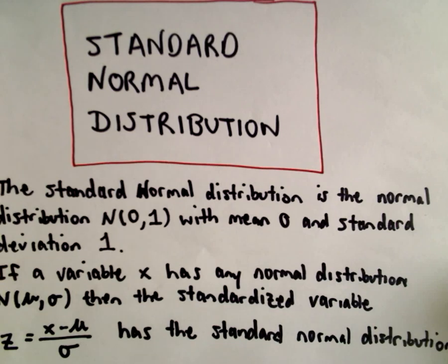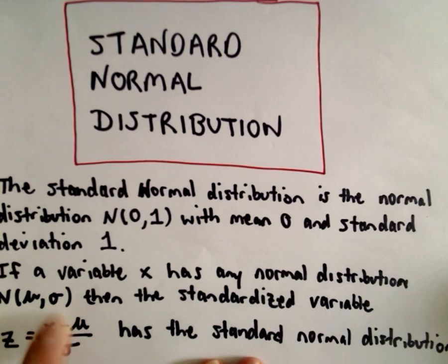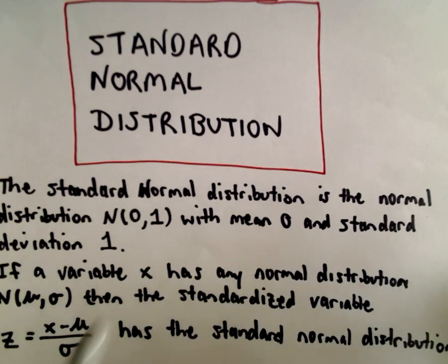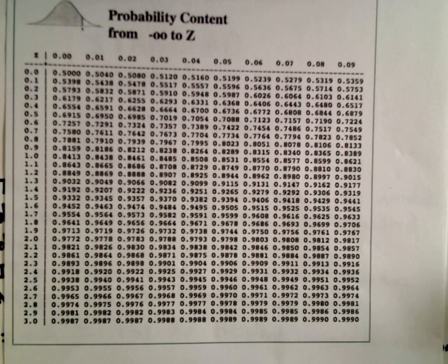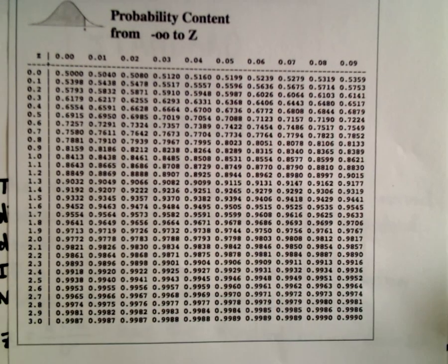In this video I want to start talking about standard normal distributions. The idea is, if you have a distribution that's normal with a mean of mu and a deviation of sigma, we can turn this back into a standard normal distribution and then read off values from our table.